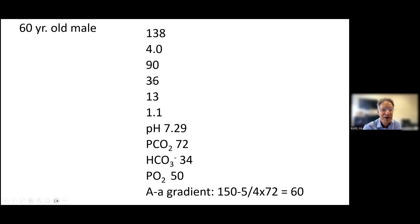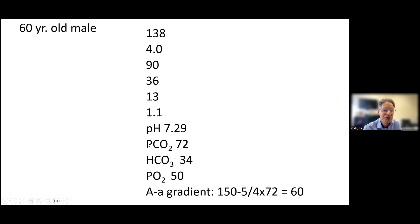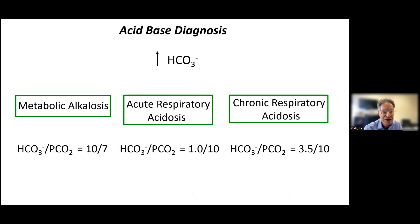Getting back to acid-base: we can look at the total CO2 or the calculated bicarbonate. We can confirm the total CO2 is correct because it should equal the bicarbonate plus 0.03 times the PCO2. Taking 34 plus 0.03 times 70 gives about 36, which matches. It's more than one above the bicarbonate here because the elevated PCO2 means more dissolved CO2 in the patient's blood.